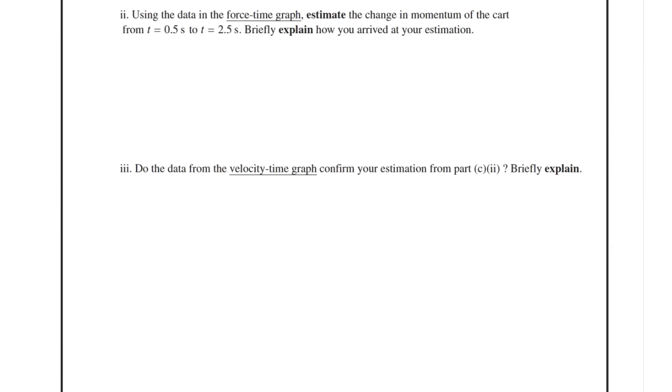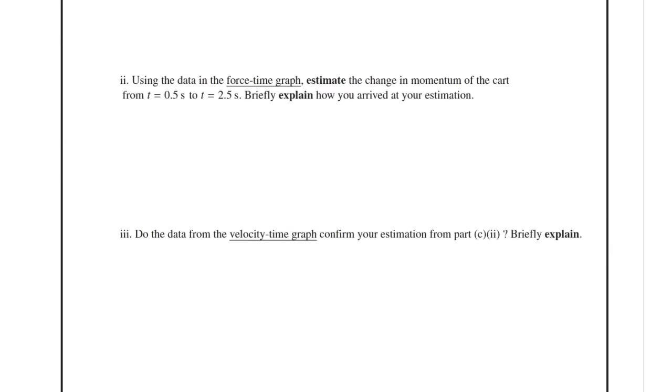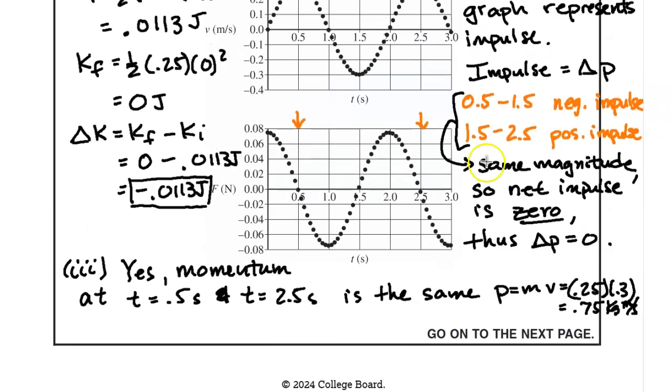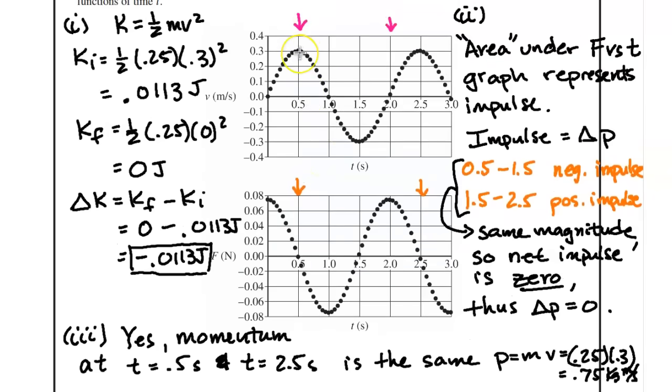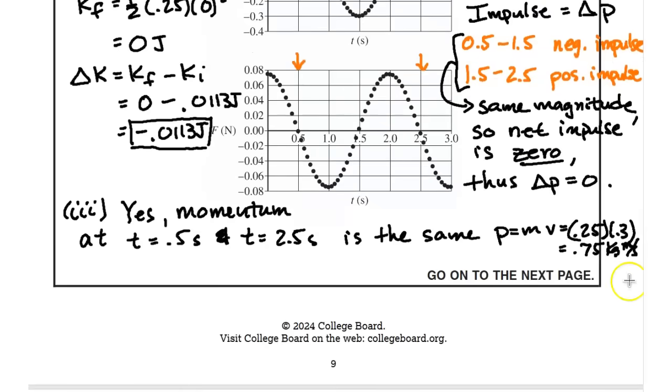Now we're going to look at 3i, which says, do the data from the velocity-time graph confirm your estimation from part 2i, briefly explain. So the answer is yes. If we look at 0.5 and at 2.5, we see that they have the same momentum because momentum is mass times the velocity. And they have the same velocity at 0.5, it's 0.3 meters per second. And at 2.5, it's also at 0.3 meters per second. So they both have the same momentum of 0.75 kilogram meters per second.